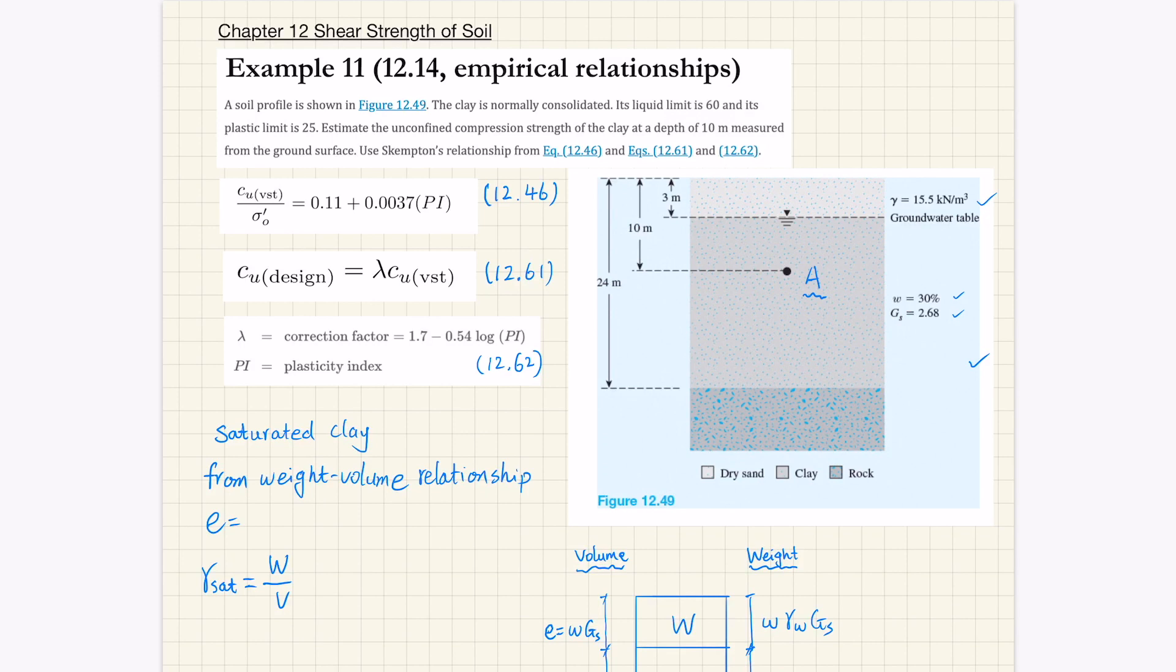We're going to use Scanton's relationship from equation 12.46, and also 12.61 and 12.62. For this clay, we also know the liquid limit and plastic limit, from which we can calculate its plasticity index PI. So it's liquid limit minus plastic limit, that's 60 minus 25 equals 35. So the plasticity index that we need to use in these equations is 35.